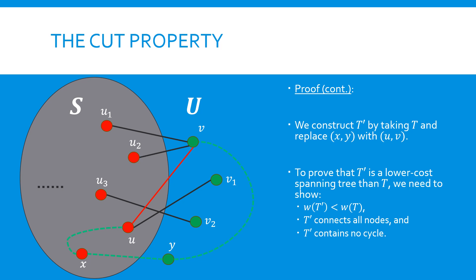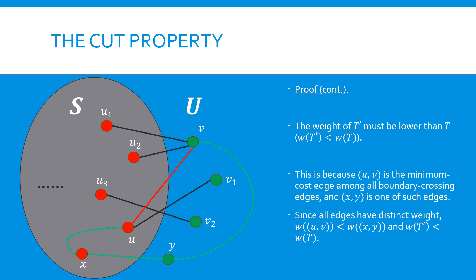First, T' has a lower total weight than T. Second, T' connects all nodes. And third, T' does not contain any cycle. It's easy to see that T' has a lower weight than T. This is because UV is the minimum-cost boundary-crossing edge, so it must have a lower weight than XY. Note that we can claim T' has a strictly lower weight than T, due to the assumption that all edges have distinct weights.